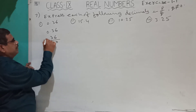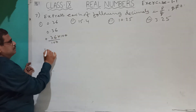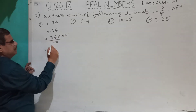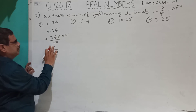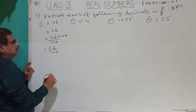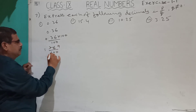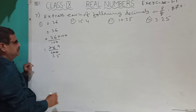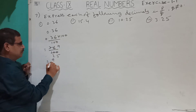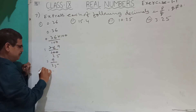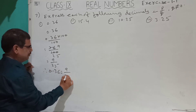Alternatively, multiply and divide by 100: 0.36 into 100 gives 36 by 100. Simplify by dividing by 4: answer is 9 by 25. Therefore 0.36 equals 9 by 25.